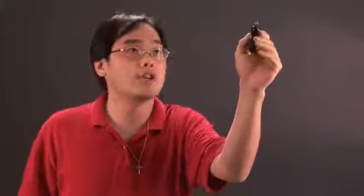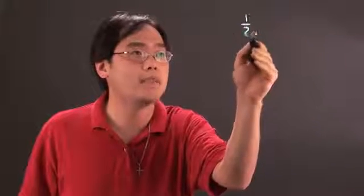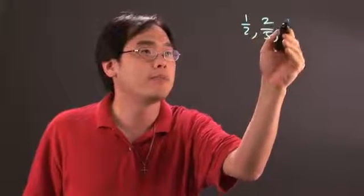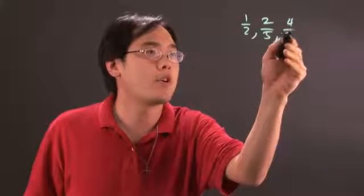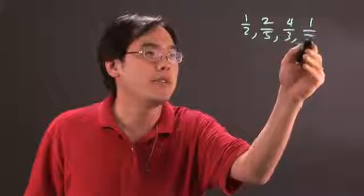When it comes to calculating fractions to get an average, you want to basically find the average of those fractions. So let's just say you have one-half, two-fifths, four-thirds, and one-seventh, for example.